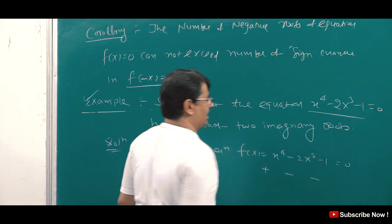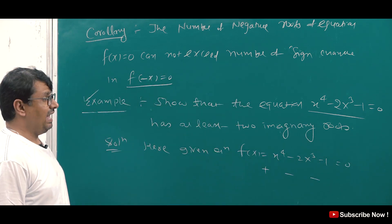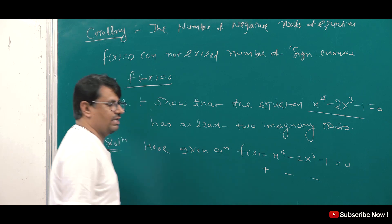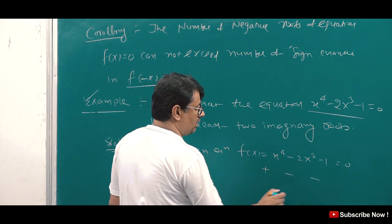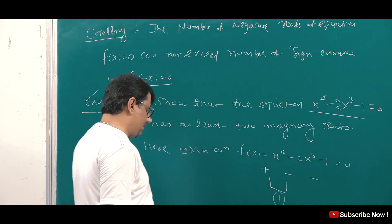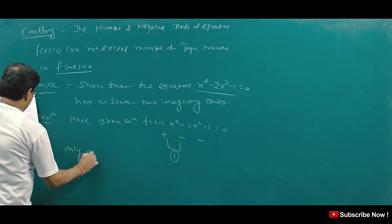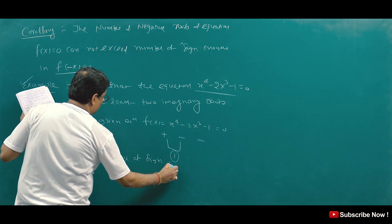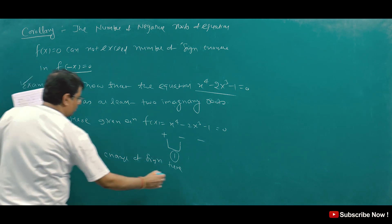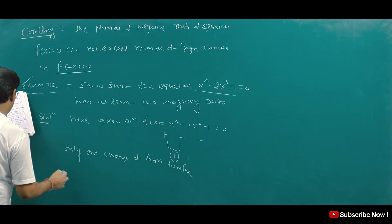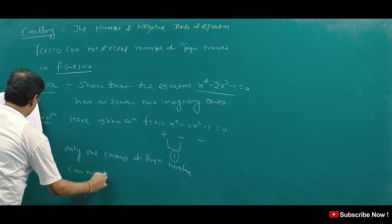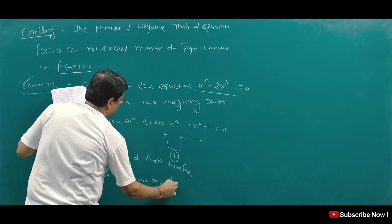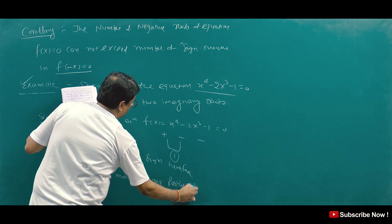See the example: show that the equation x⁴ - 2x³ - 1 = 0 has at least 2 imaginary roots. Given equation F(x) = x⁴ - 2x³ - 1 = 0. You will see here the signs are plus, minus, minus — wait, plus, minus — so there is only one sign change. Therefore, it cannot have more than one positive real root.